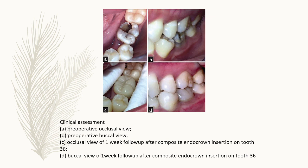Clinical assessment shows preoperative occlusal and buccal views, and the occlusal view of one-week follow-up after composite endocrown insertion on tooth 36. Regarding isolation, I always recommend using a rubber dam. If not possible, a cotton roll isolation can be used, though this is not the preferred approach.